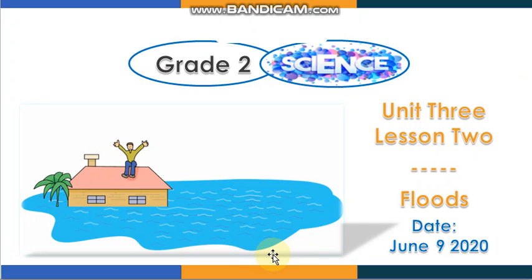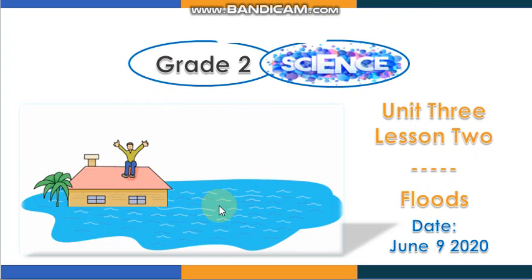I want you to look at the picture and tell me what do you see. You can see a man who is sitting on the roof of his house asking for help. Why do you think he is asking for help? Because as you can see, the water is all around his house. So how does this happen, and what do we call this?